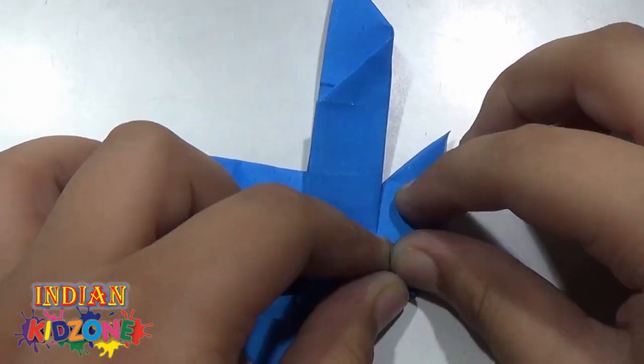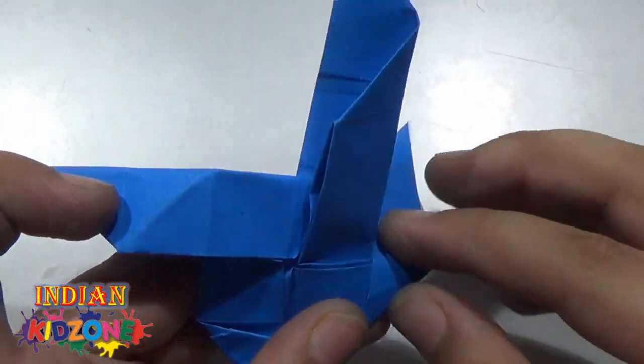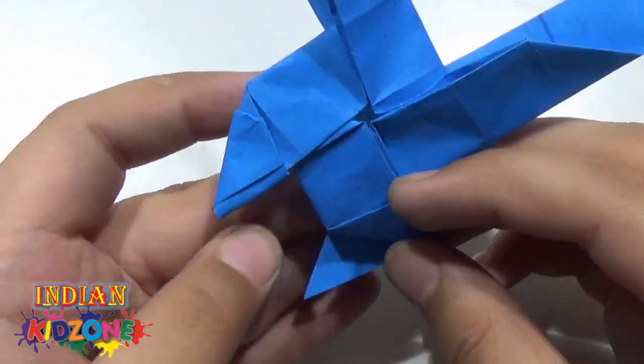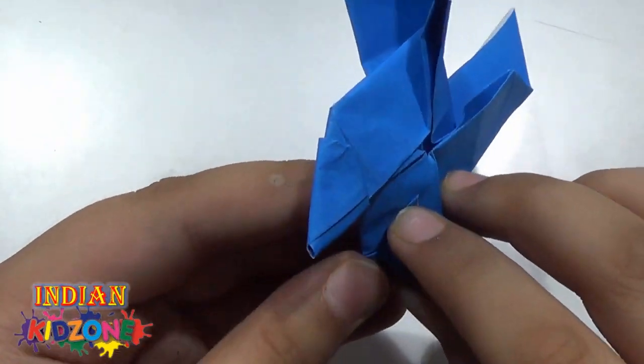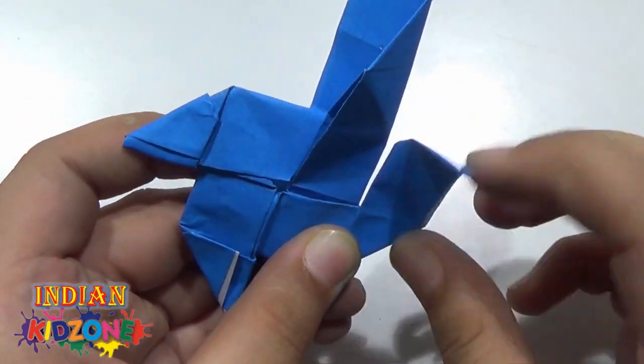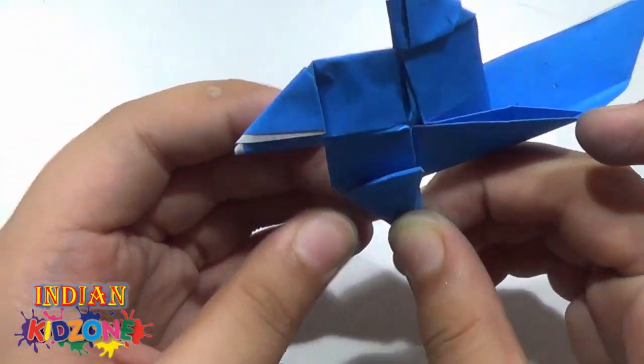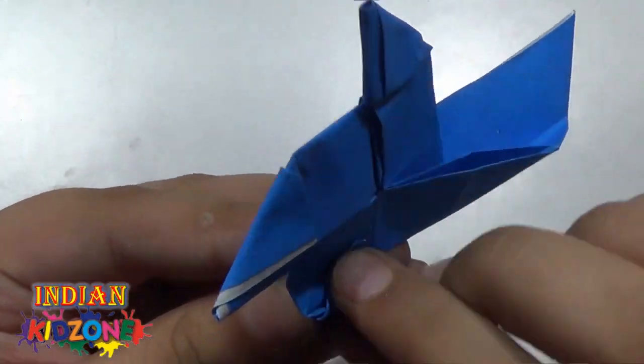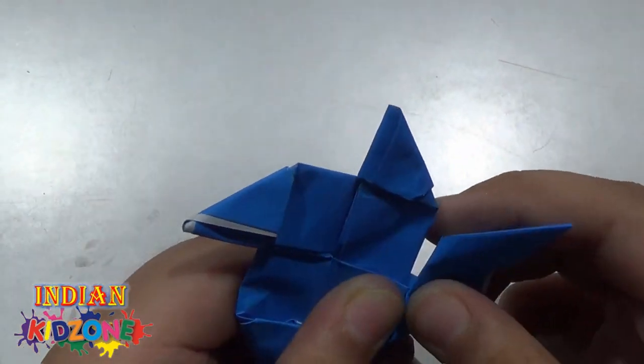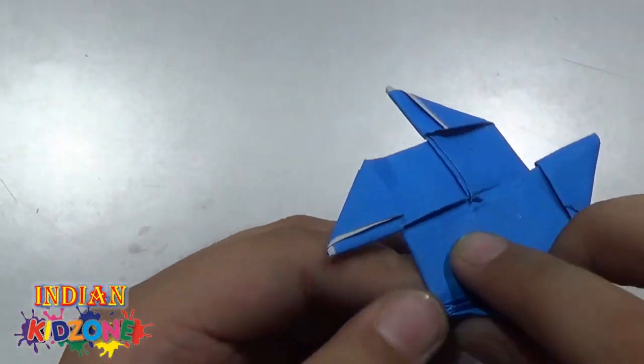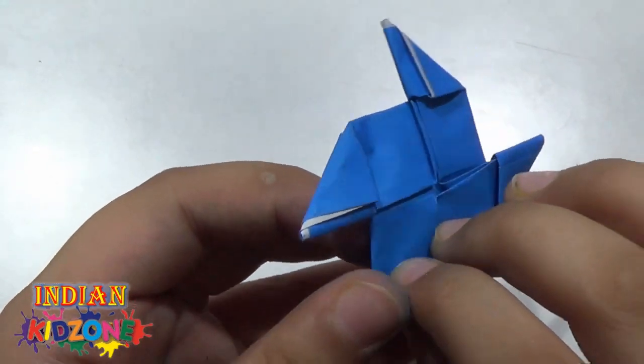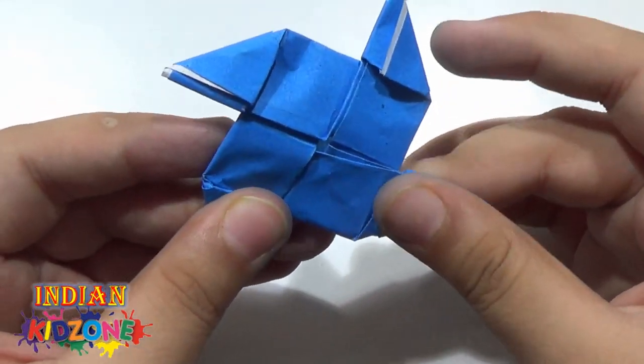So in front, put it in back, and in front. Open the pocket. Put the flap into this pocket. Repeat, back and in front. Open the pocket and put the flap into this pocket. Like this. And this is the last flap. So repeat. We are done.